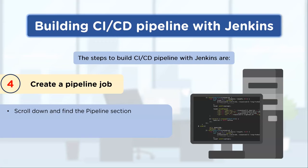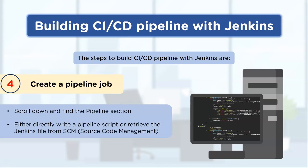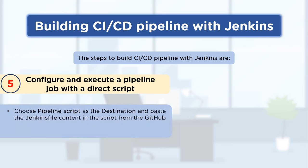Once the pipeline is selected and named, scroll down and find the pipeline section. There you can choose how to manage your pipelines — you can directly create a pipeline script, or you can retrieve the Jenkins file from a source code management tool like GitHub or a version control system. These are the variety of options available for creating a pipeline job.